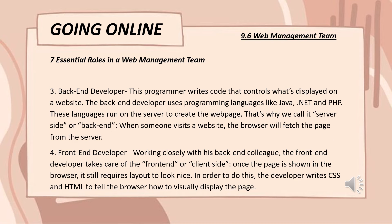The back-end developer writes code that controls what's displayed on a website, using programming languages like Java, .NET, and PHP. These languages run on the server to create the web page — that's why we call it server-side or back-end. When someone visits the website, the browser fetches the page from the server. The front-end developer, on the other hand, works closely with the back-end developer and takes care of the client-side. Once the page is shown in the browser, the front-end developer writes CSS and HTML to tell the browser how to visually display the page.